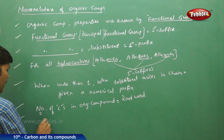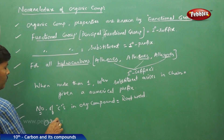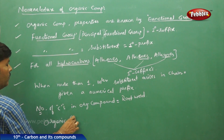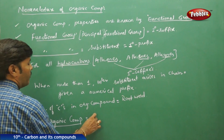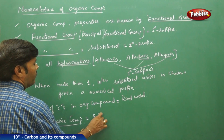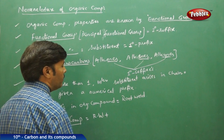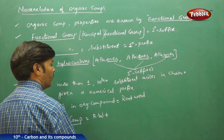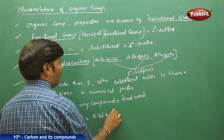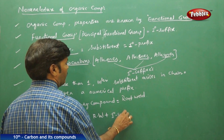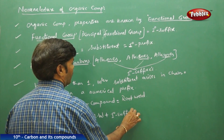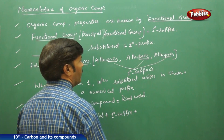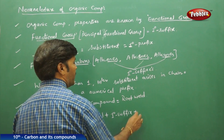The number of carbons in an organic compound is always given by a root word. Every organic compound is made up of a root word, a primary suffix, a numerical prefix, and a secondary suffix.